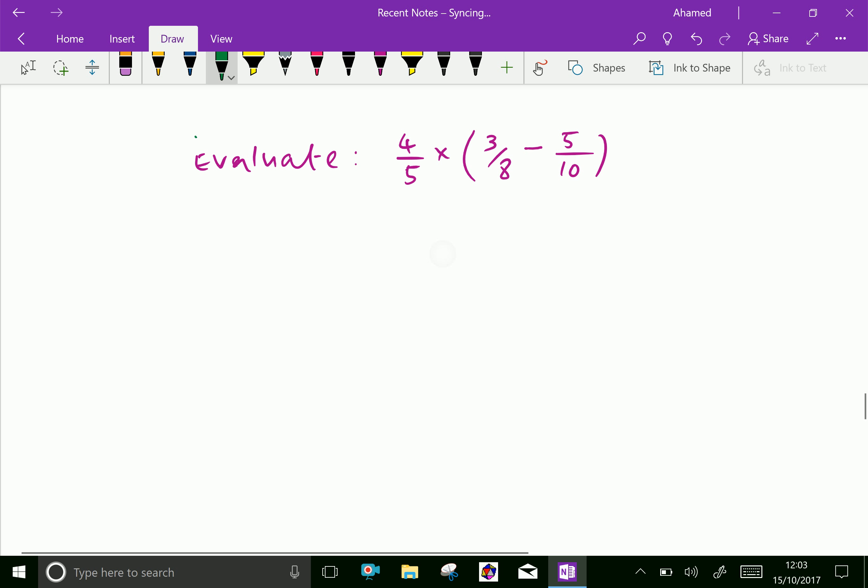One more problem. Evaluate 4 over 5 into bracket 3 over 8 minus 5 over 10. 4 over 5 into bracket, 8 and 10 LCM we'll find. 2 into 4 and 5, 2 into 2 and 5, another 2 into 1 and 5, 5 into 1 and 1. Means 2 times 2 is 4, 4 times 2 is 8, 8 into 5 is 40. 40 is our LCM.